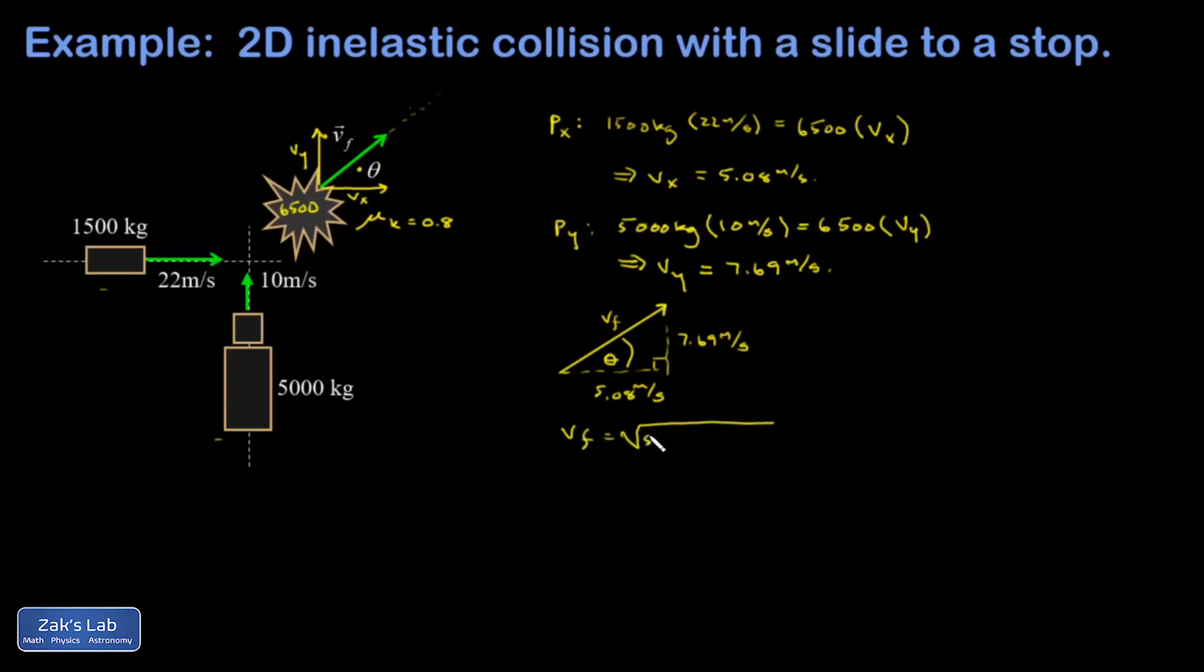V final is going to be the square root of the sum of the squares of the legs, giving me approximately 9.22 meters per second. So there's one of our answers. And then theta is the angle whose tangent is 7.69 over 5.08, so theta is approximately 56.6 degrees.